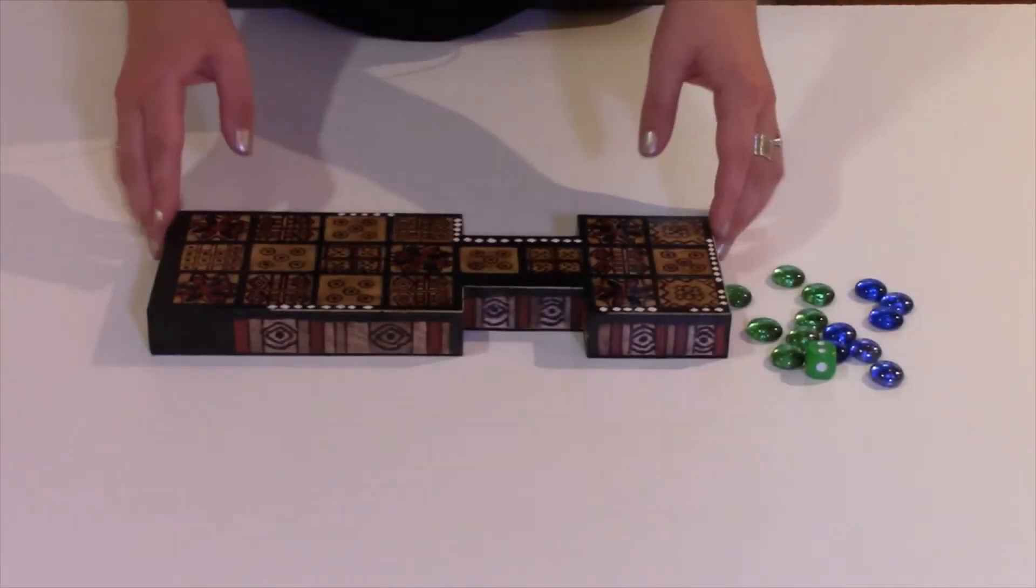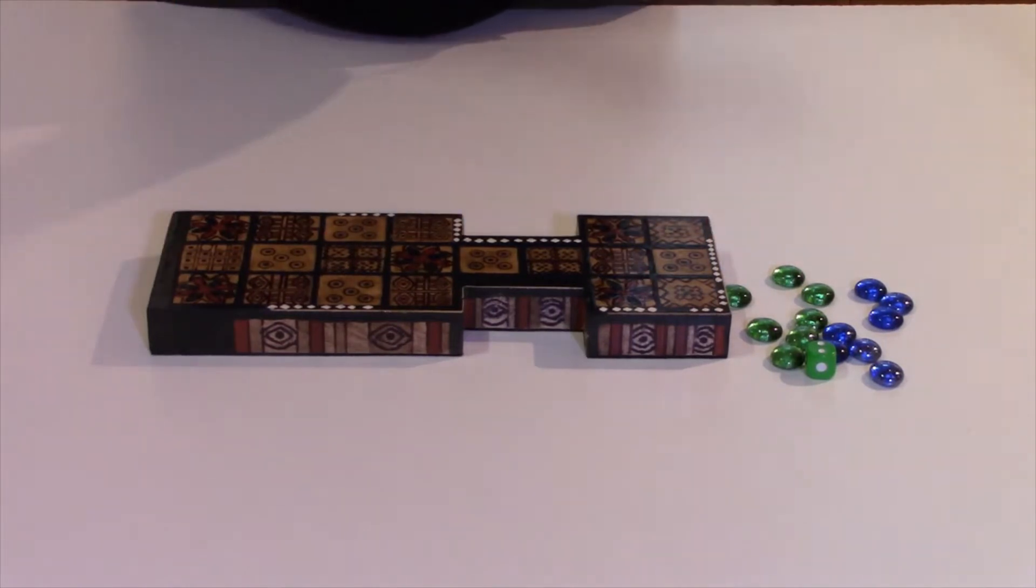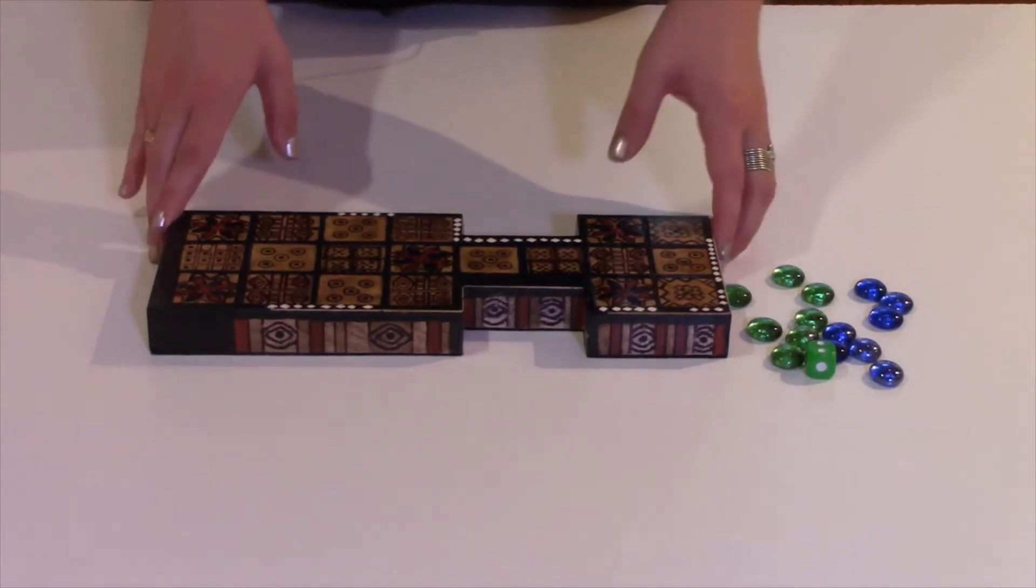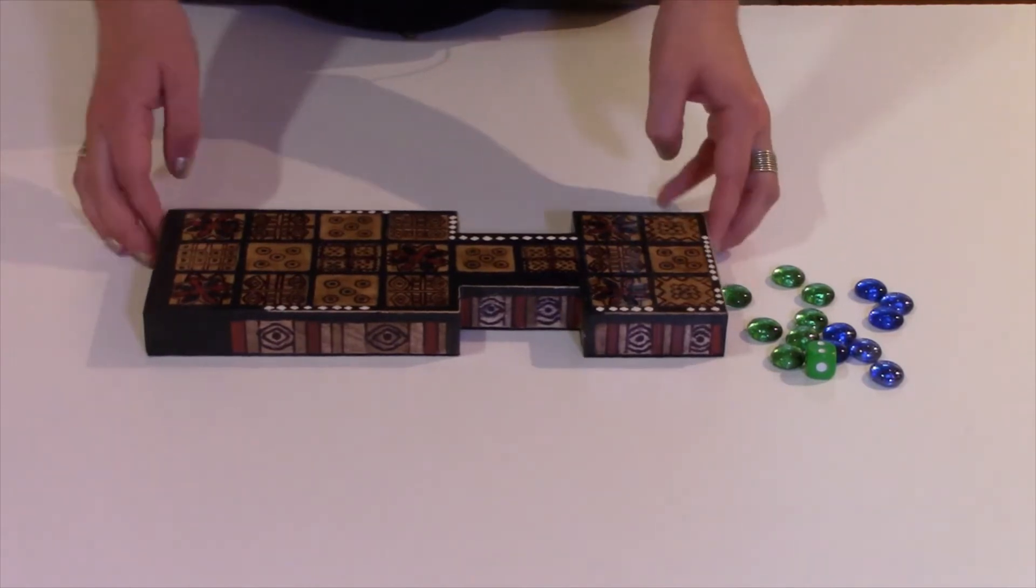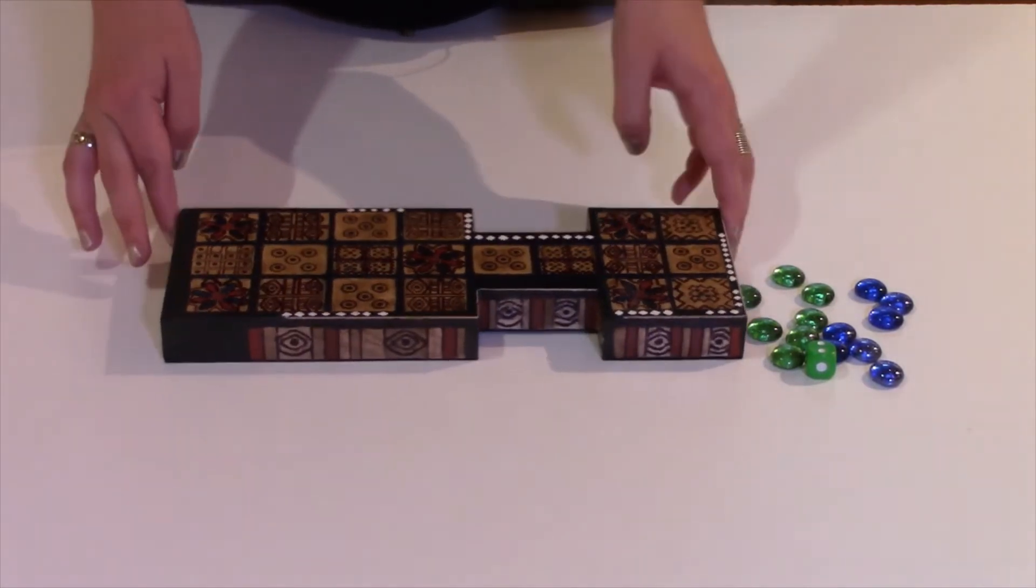To get started, we are going to get our game boards ready. In your materials box, you will have a Royal Game of Ur template page. Yours is going to look a little bit different than mine, but that's okay.